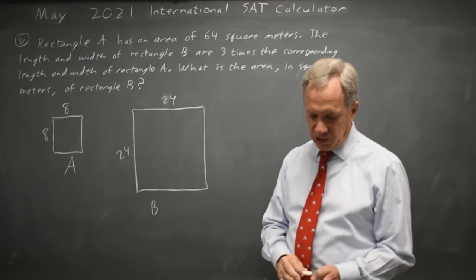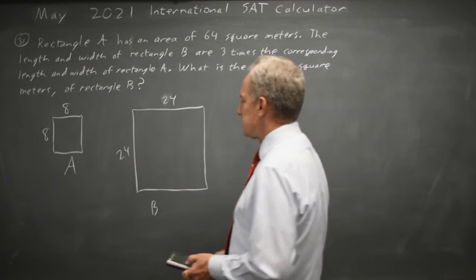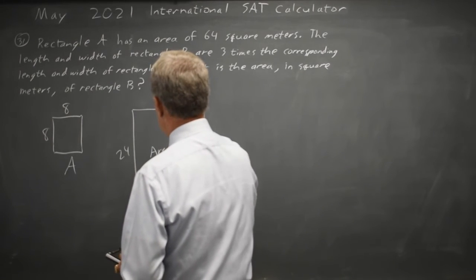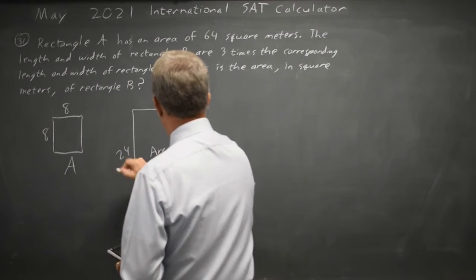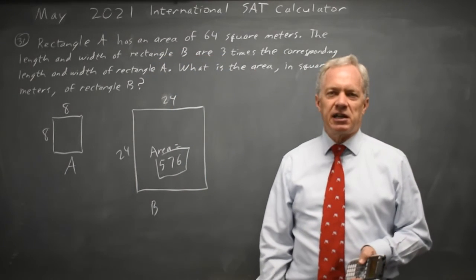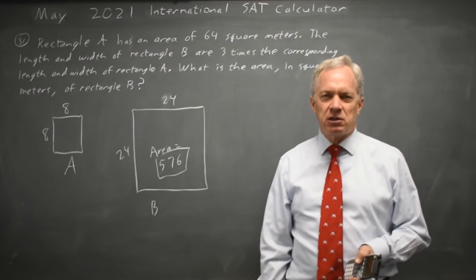24 times 24 is 576. And if you're worried, what if rectangle A wasn't actually 8 by 8? What if it's 2 by 32 or 4 by 16?